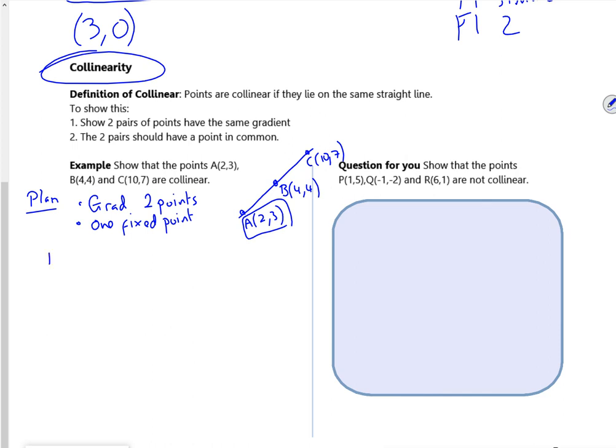Because if the gradient is same from A to B and the gradient is same from A to C, because we go through the same point, it must be collinear. So my gradient from A to B, my change going up is 4 take 3, which is 1. My change going across is 4 take 2. So my gradient from A to B is going to be a half. Then let's have a look at my gradient from A to C. So the important thing here is I have one common point, one fixed point.